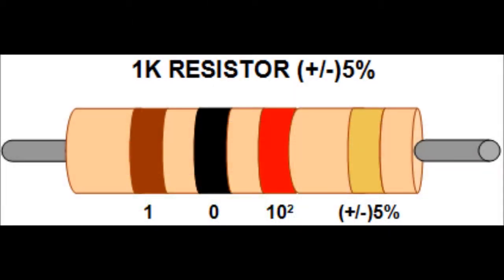Last but not least, we have the fourth band. This indicates the tolerance of the resistor, or the maximum percent error between the recorded resistance and the actual resistance.